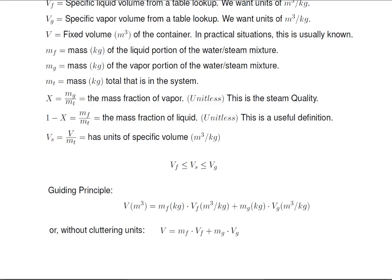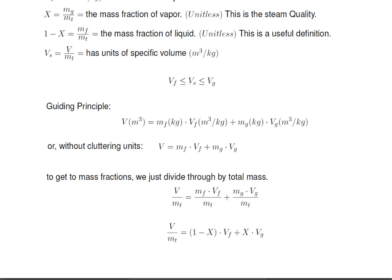Now the guiding principle is that the volume of the system has to be the mass of the fluid times the specific volume of the fluid plus the mass of the gas times the specific volume of the gas. To get the mass fractions, we just divide through by the total mass of the system. Then, by looking back, we can see that Mf over Mt is 1 minus x. So we convert Mf over Mt into 1 minus x.